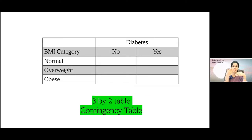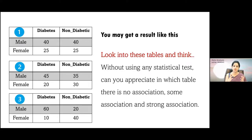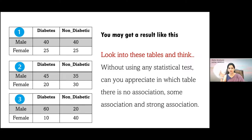Similarly, you can have a BMI category — a three-by-two table where you classify BMI as normal, overweight, and obese, and similarly diabetes as absent or present. You may have a result like the three tables shown. Look at table number one, two, and three. Can you guess in which case there will be association and in which case there is no possibility of any association? Think for a while and then answer — in which case do you think there will definitely be association?